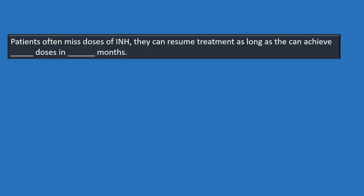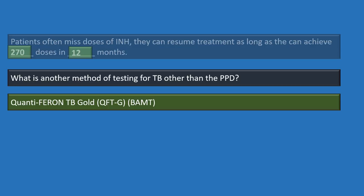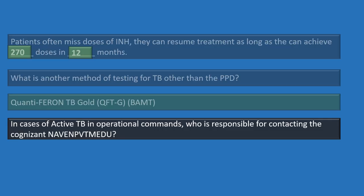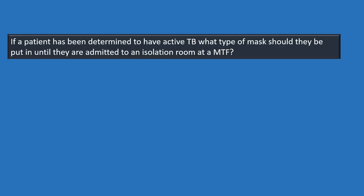Patients who miss doses of INH can resume treatment as long as they achieve 270 doses within 12 months. Another testing method besides PPD is the QuantiFERON-TB Gold (QFT-G) blood test — used instead of, not in addition to, the PPD. In active tuberculosis cases at operational commands, the commanding officer or officer in charge is responsible for contacting the cognizant Navy Environmental Preventative Medicine Unit.